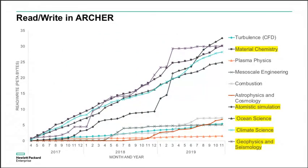This shows the trend of different projects on Archer over a couple of years, with read and write combined. There are five application domains on top as big IO users, and many smaller projects below. Most interesting is the slope — things which have increased pretty fast. Atomistic simulation was not using the file system much but last year really ramped up and has become one of the top users now. Material science and climate science have a similar, more gradual increase over the years. Combustion is also showing a good increase recently.